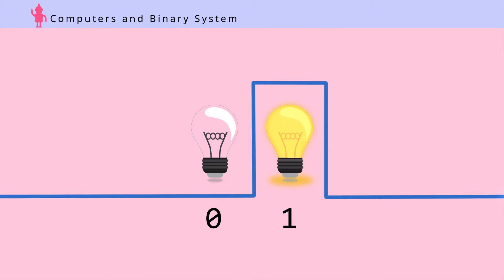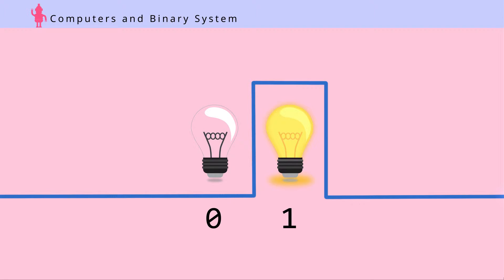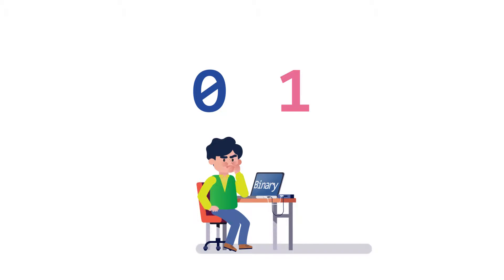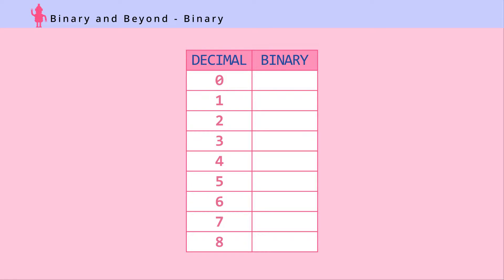Well, a computer is basically circuits and wires with electricity flowing through them. Electrical signals can have two states: on or off, or one and zero. This is the basic unit of data representation. How would you count to ten if you only have two numbers, zero and one? Let's try counting in binary.